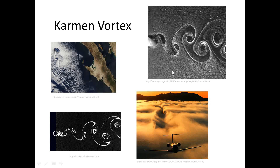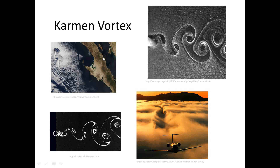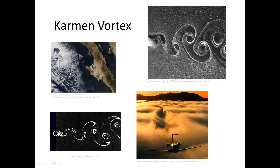The Karman Vortex Street is an interesting aspect of fluid mechanics that gives rise to some really cool looking patterns, and it's also something that can have some useful applications. Here's a picture from space of a place off the coast of Baja California, and here's what's called the Karman Vortex Street being shed off of this island. There's a vortex here, and then another one, and another one, and so on.